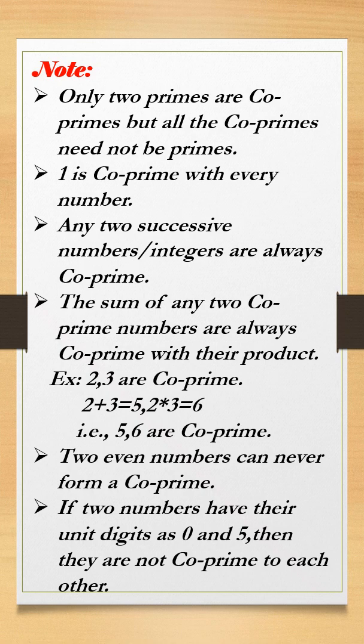The sum of any two co-prime numbers is always co-prime with their product. That means if we find the sum of two co-prime numbers and the product of those co-prime numbers, the sum value and the product value must themselves be co-prime numbers.